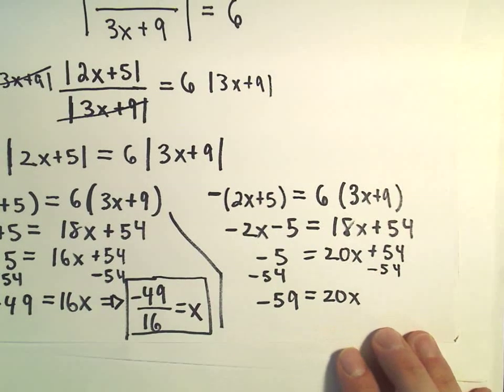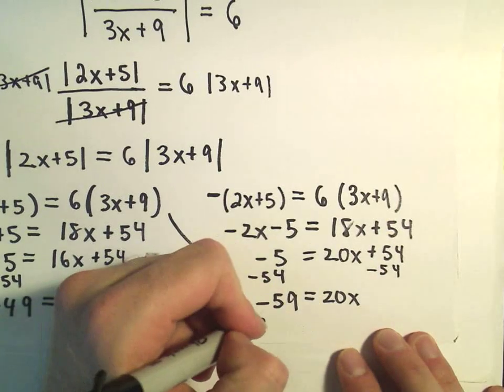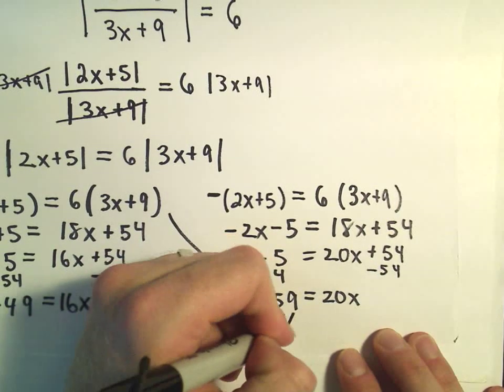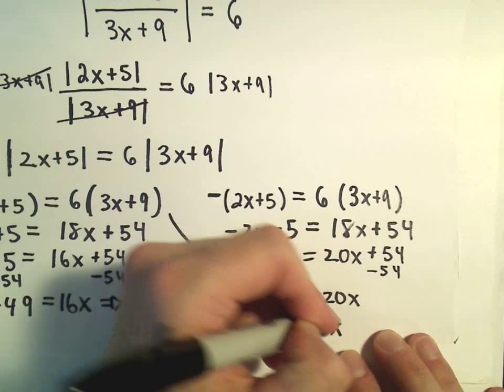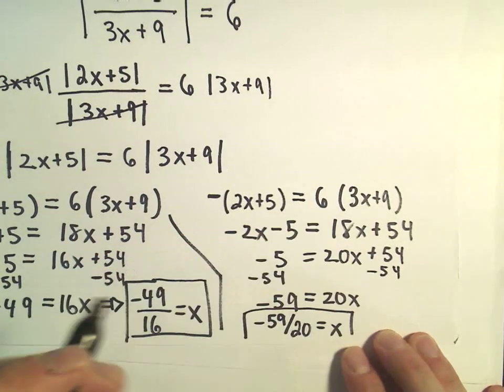Again, if I want to solve for x, I'll just divide both sides by 20. And that'll say negative 59 divided by 20 equals x is my other solution.